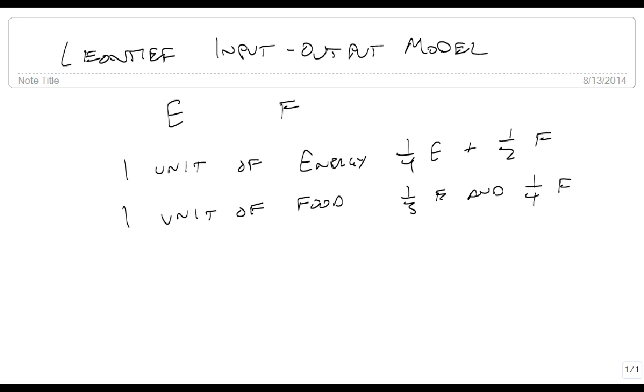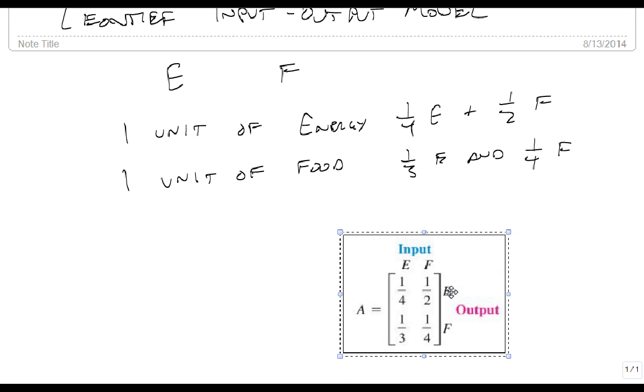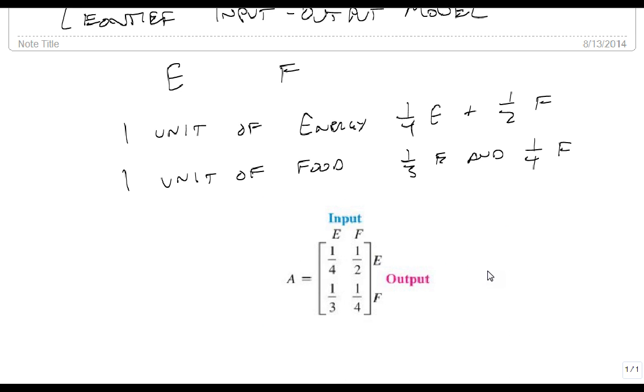And this gives us an input-output matrix that looks like this. So here's my input-output matrix. Notice the energy, energy gives me one-fourth. Food to energy gives me one-half. One-third energy to food and one-fourth food to food. So I now have my input-output model.